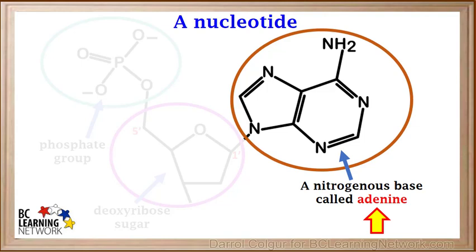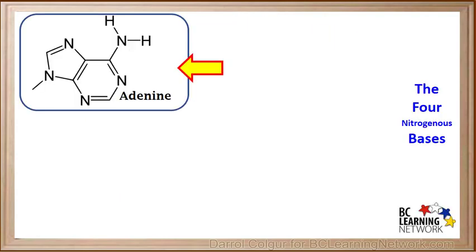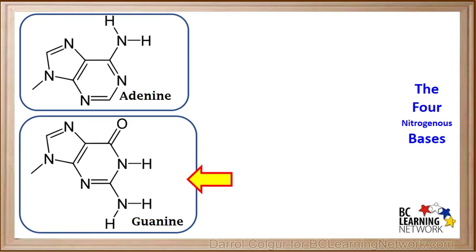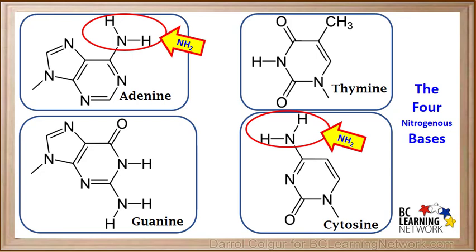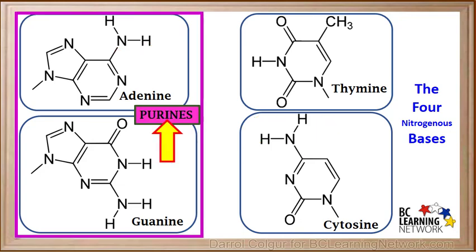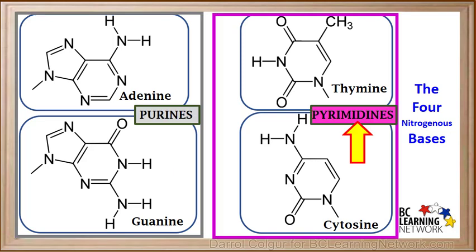The base shown here in this nucleotide is adenine. Adenine is only one of four bases found in the nucleotides of DNA. The four nitrogenous bases are adenine, guanine, thymine, and cytosine. Note that the groups with the N and the two H's can also be depicted simply as NH2, which we'll see in other models. The two bases consisting of five and six-membered rings joined together are called purines — these are adenine and guanine. The two bases consisting of only six-membered rings are called pyrimidines — these include thymine and cytosine.